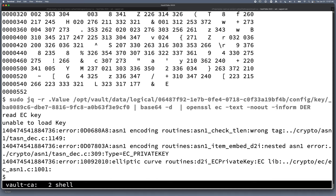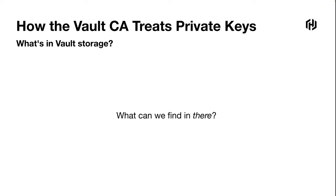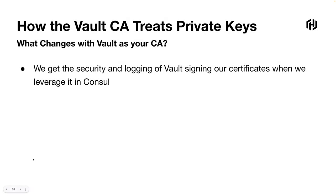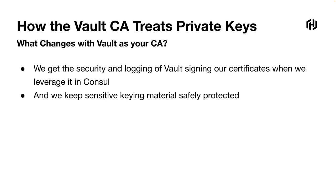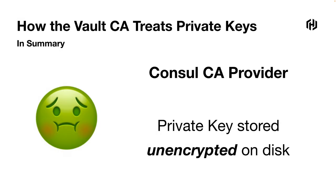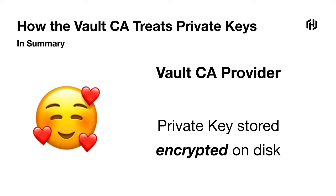So what changes when we use Vault as our certificate authority? We get the security and logging of Vault signing our certificates when we leverage it in Consul, and we keep that sensitive keying material safely protected inside of Vault's cryptographic barrier. In summary: with the Consul CA provider, the private key is stored unencrypted on disk. With the Vault CA provider, the private key is stored encrypted on disk. We're much happier.